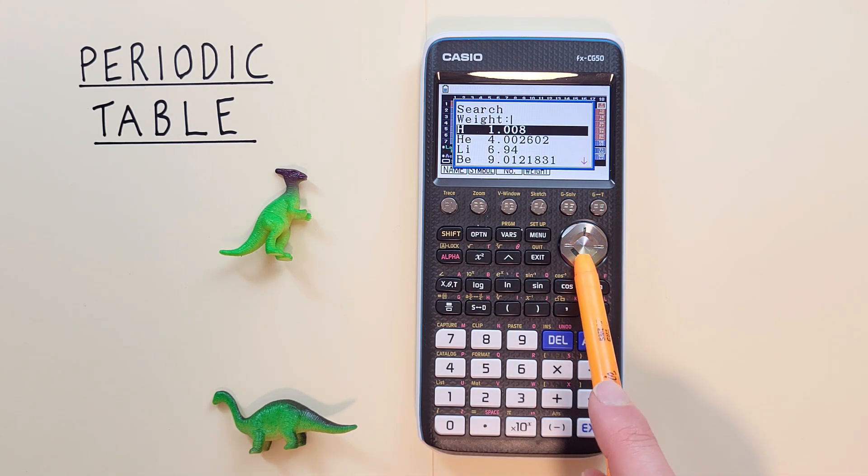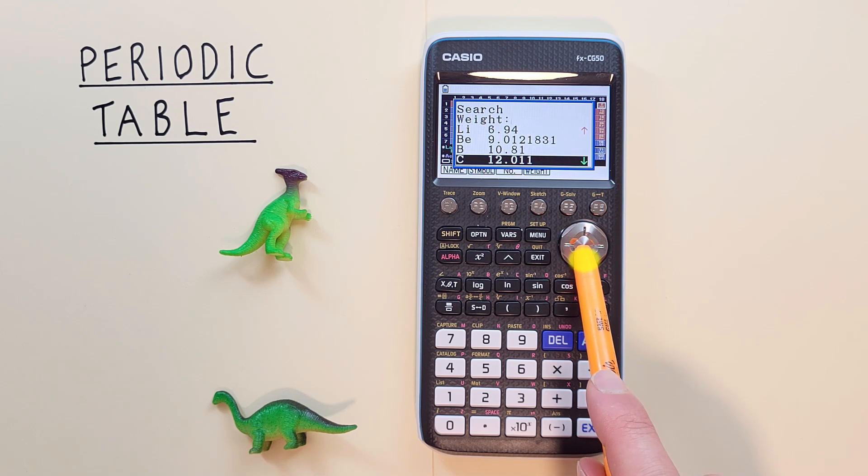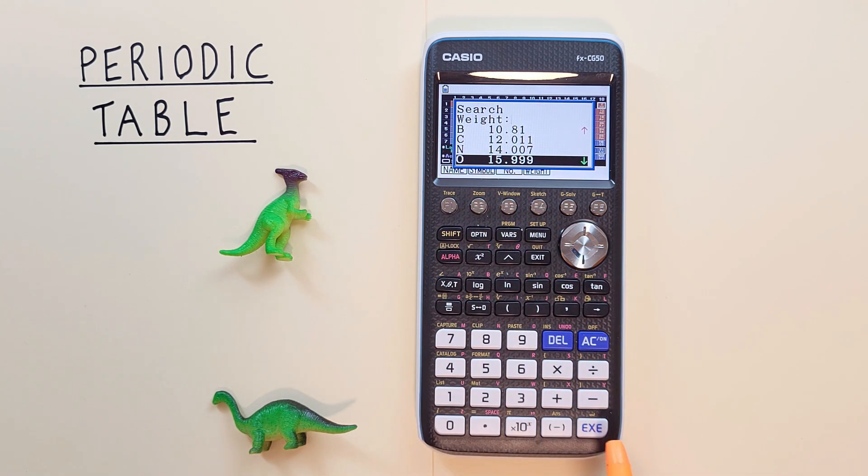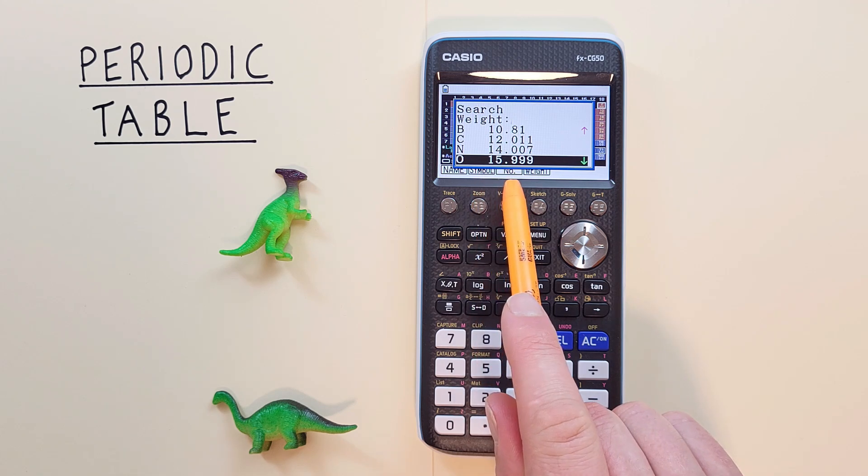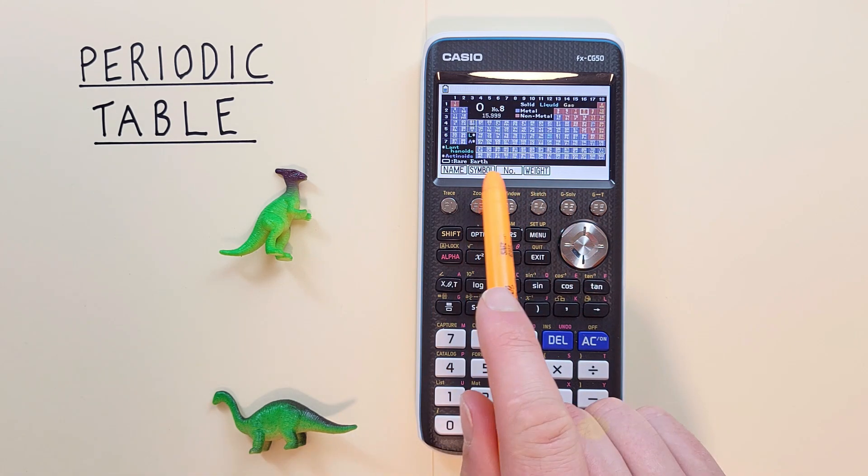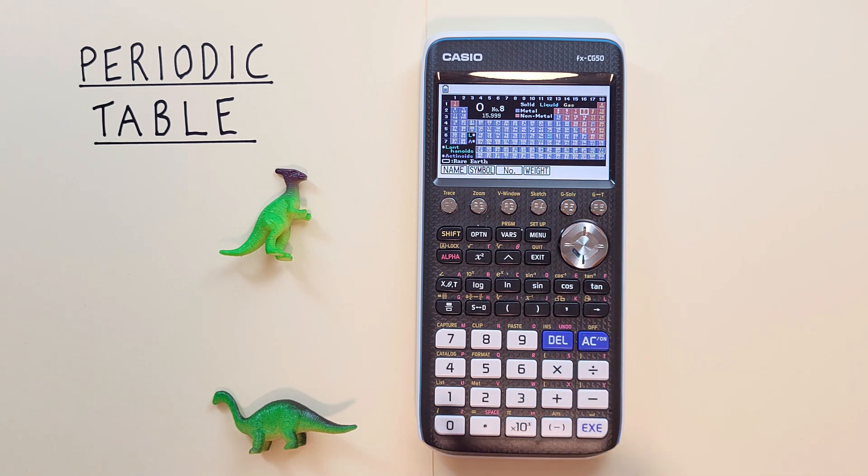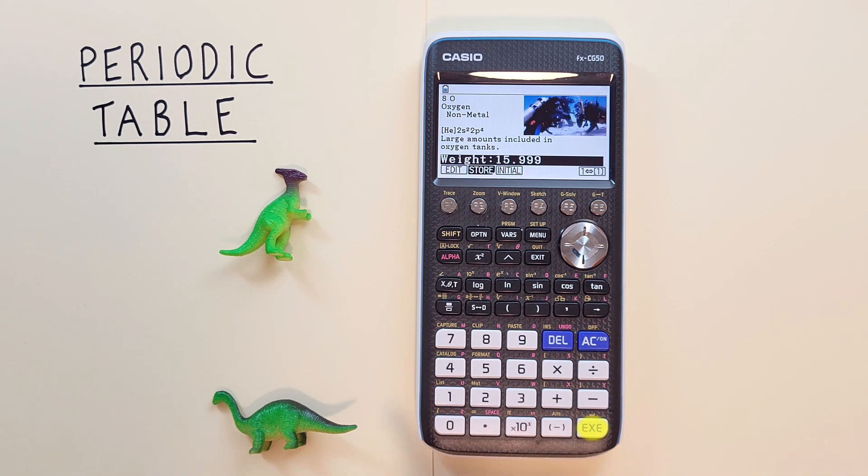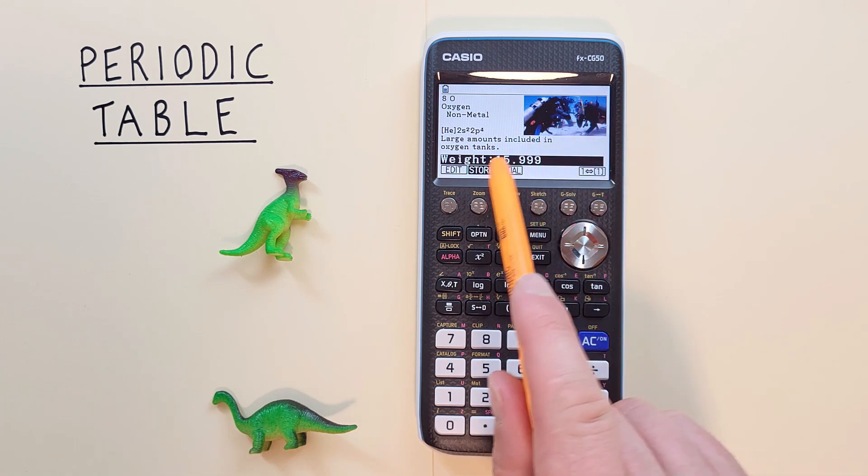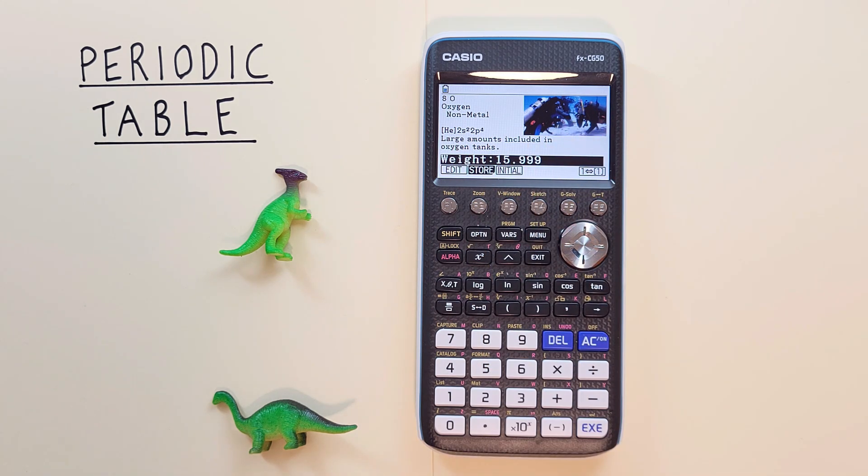And the weight of the element under F4. There we go. And again, we can scroll through our different elements. We see O with a weight of 15.999. If we select it, our cursor has gone to O. And if we select it again, we see that O is oxygen. There's our fun fact, our picture, and our weight. Again, we can back out with the EXIT key.